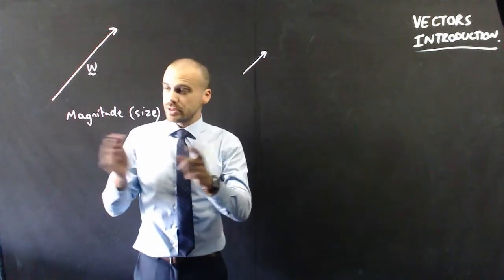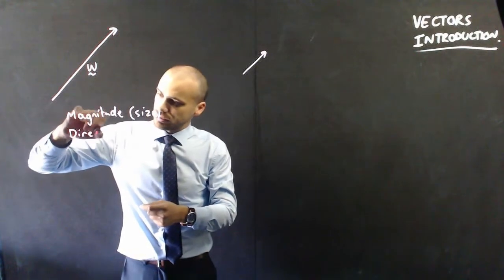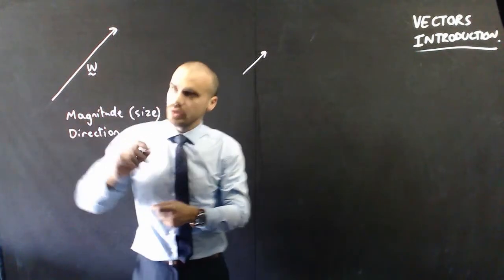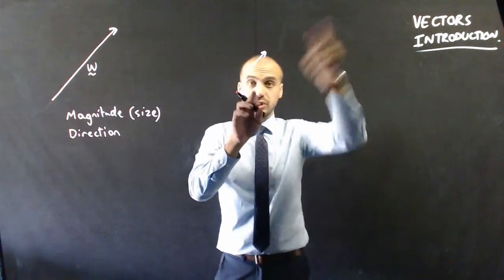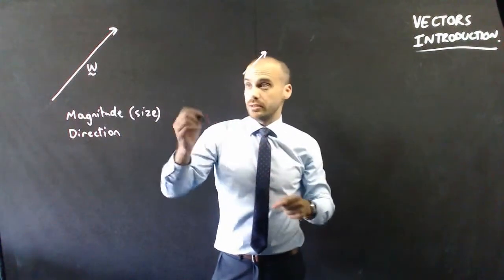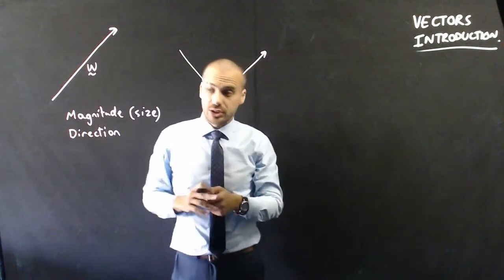The other thing that matters when it comes to arrows is their direction. We can see that the direction of this arrow, pointing in that direction, is the same as the direction of that arrow. But I could draw an arrow that looks like this, and that's going in a different direction.